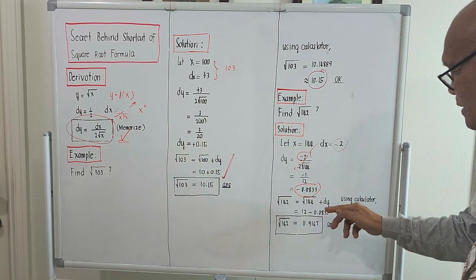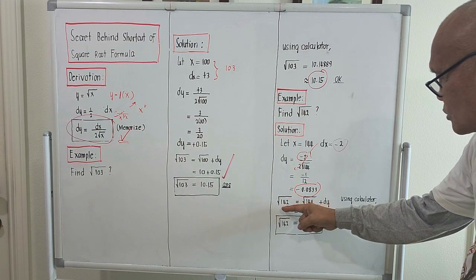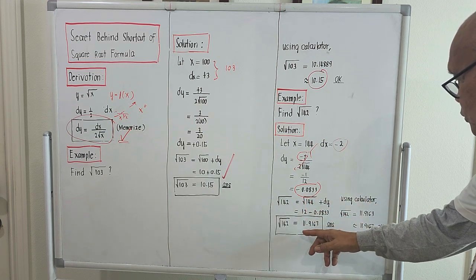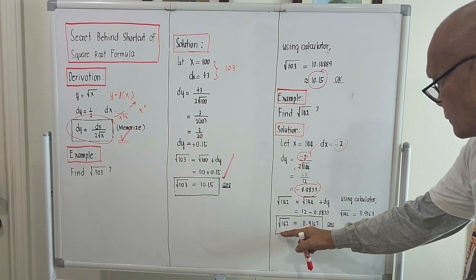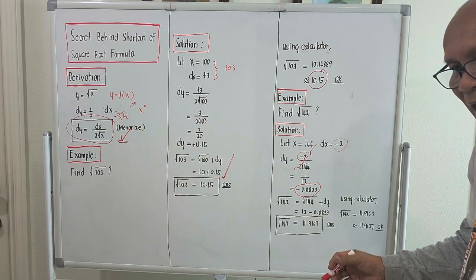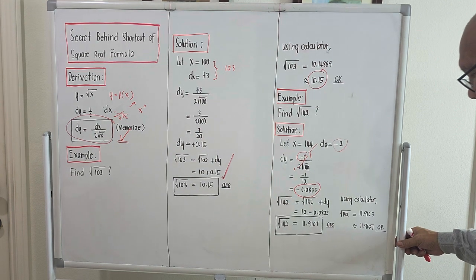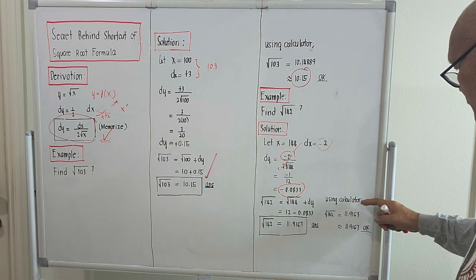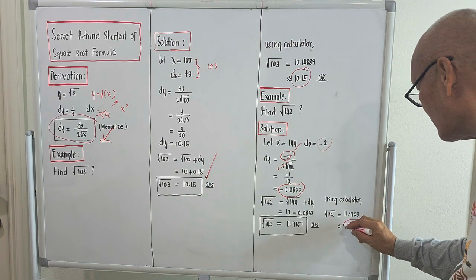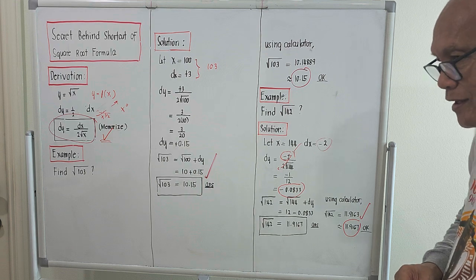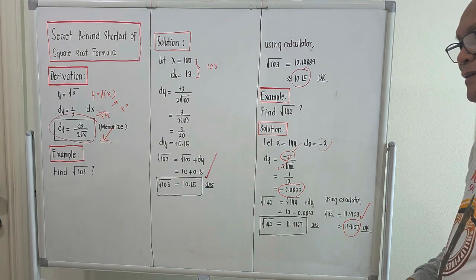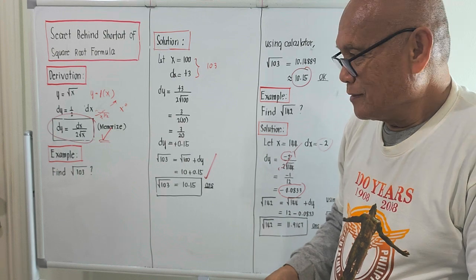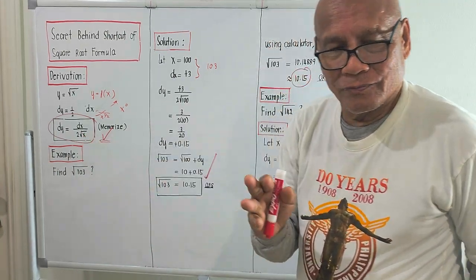Our answer should be less than 12, so we subtract something from 12 to satisfy this 142. The square root of 142 equals the square root of 144 plus dy: 12 plus negative 0.0833, which simplifies to 11.9167. To check the validity, the square root of 142 using a calculator gives 11.9163, which is approximately 11.9167 — same as our answer. The secret behind the shortcut for square roots is solvable using this formula, and for as long as we are taking the square root of a number, this will be applied.